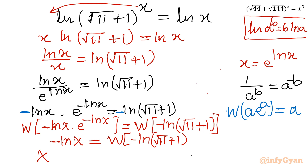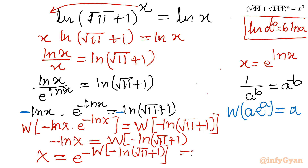So we can write our x value. It would be equal to e raised to the power of minus W of minus ln(√11 + 1). If you resolve this using the Lambert W function, this value comes out to be approximately −0.485, and it is the only real value.